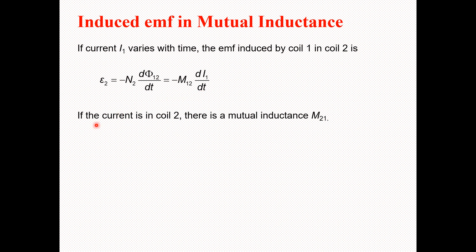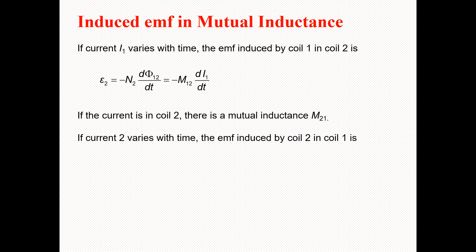Now if we reverse the process and say that the current is in coil 2, there is a mutual inductance M21. If current I2 varies with time, then the EMF induced by coil 2 in coil 1 will be equal to minus M21 times dI2/dt.